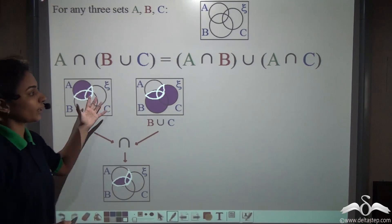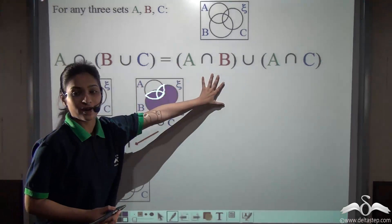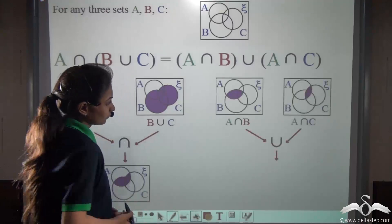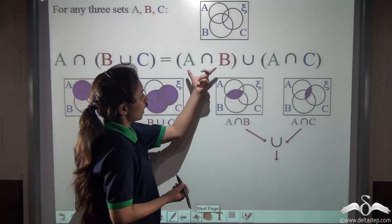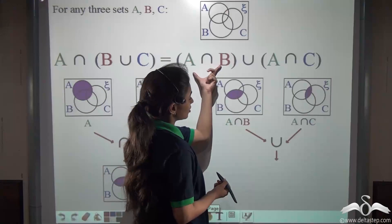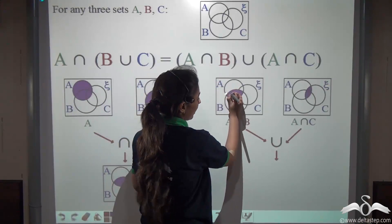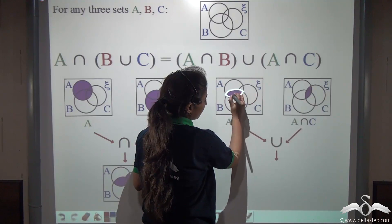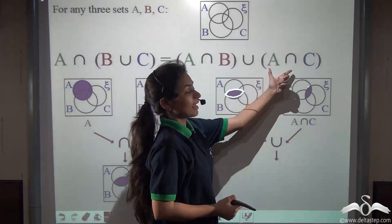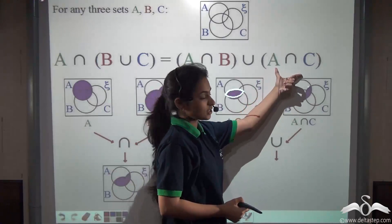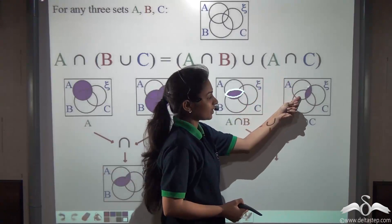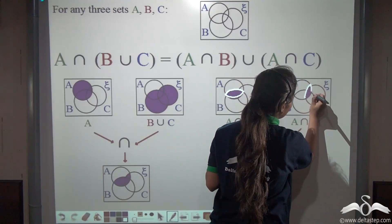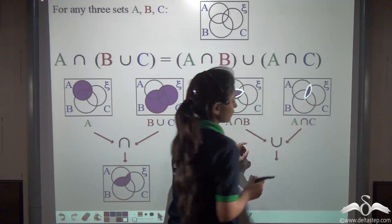Now let's see what we get in the Venn diagrams for the right hand side. A intersection B is represented by the common part of A and B, and A intersection C is represented by the common parts of A and C.